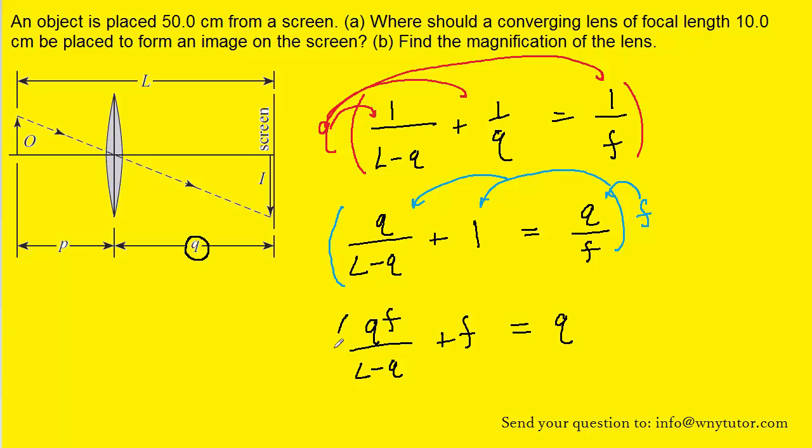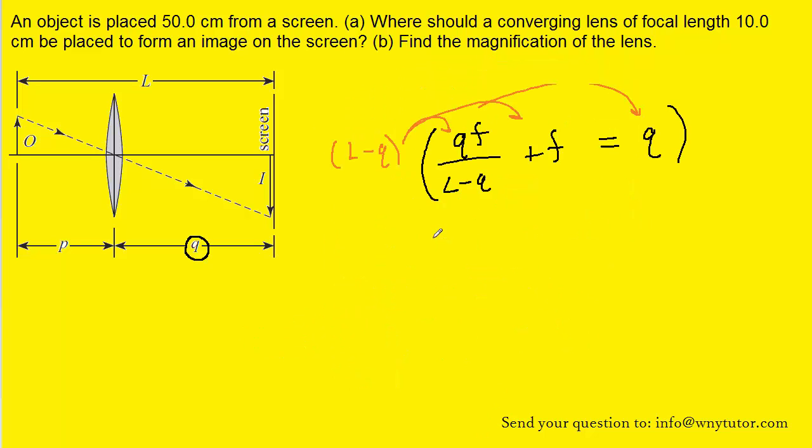And we could then multiply by the term L minus Q. Make sure you distribute it again. And when you distribute it to the first term the L minus Q will cancel with the L minus Q in the denominator so you'll be left with just QF. Then you'll have plus the focal length times the L minus Q. And that's going to equal Q times the L minus Q.